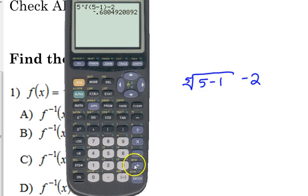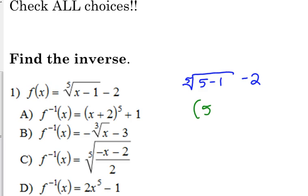So we get this negative decimal answer. We want to store that as x because we're going to plug it into the other answer choices. So let me write down what I did. I plugged in 5, and I got this answer. So that's for the original.